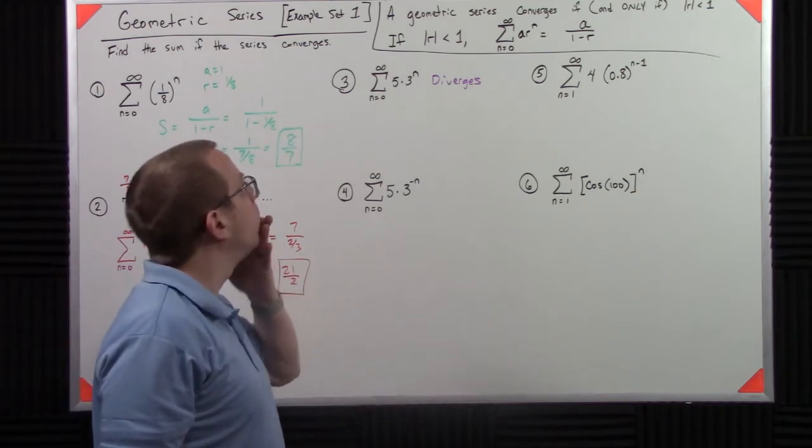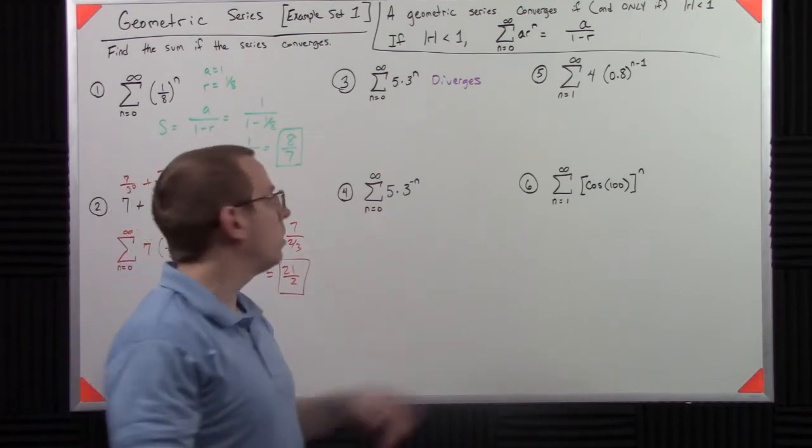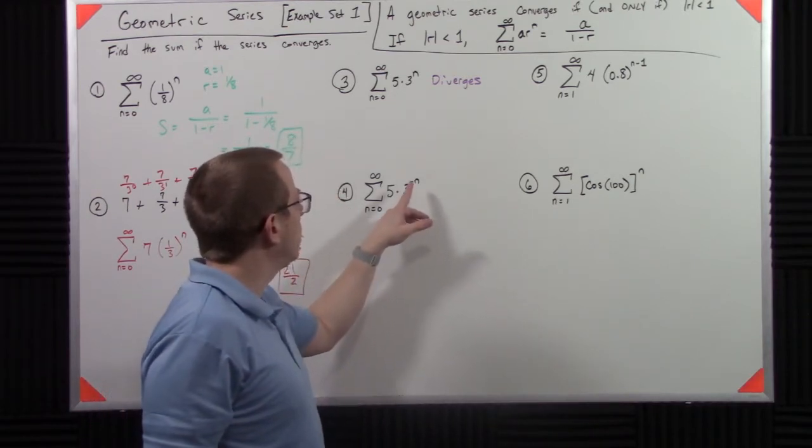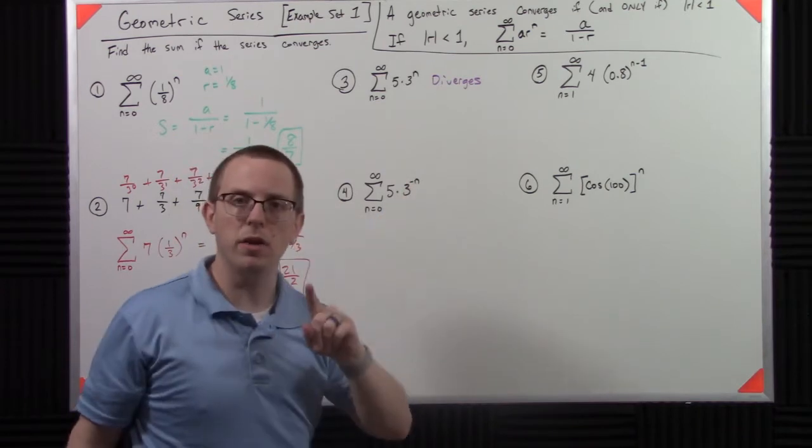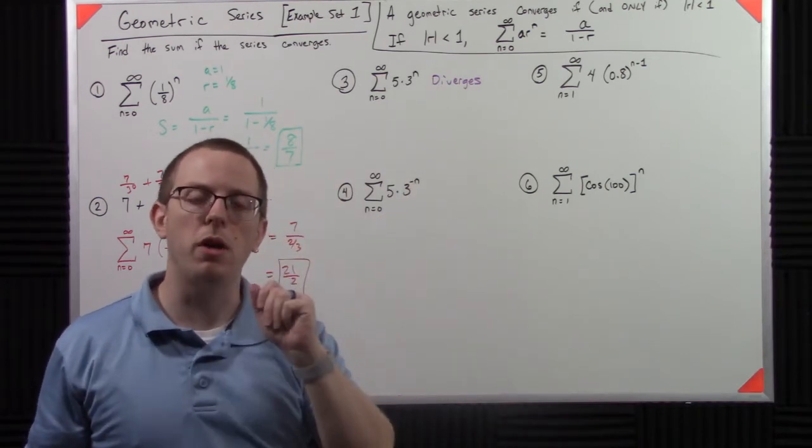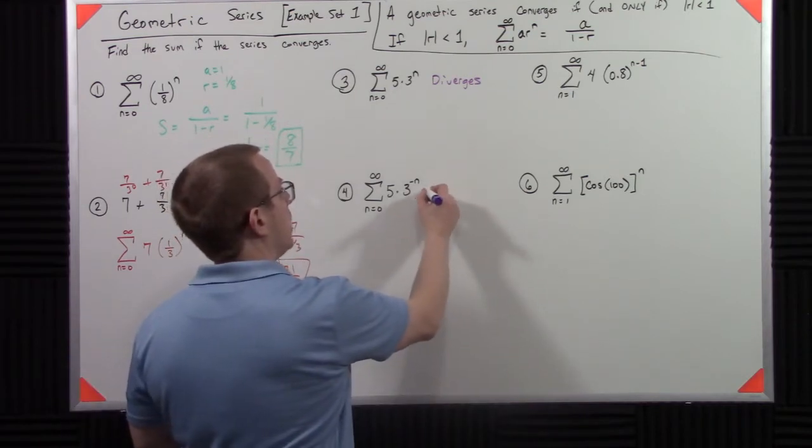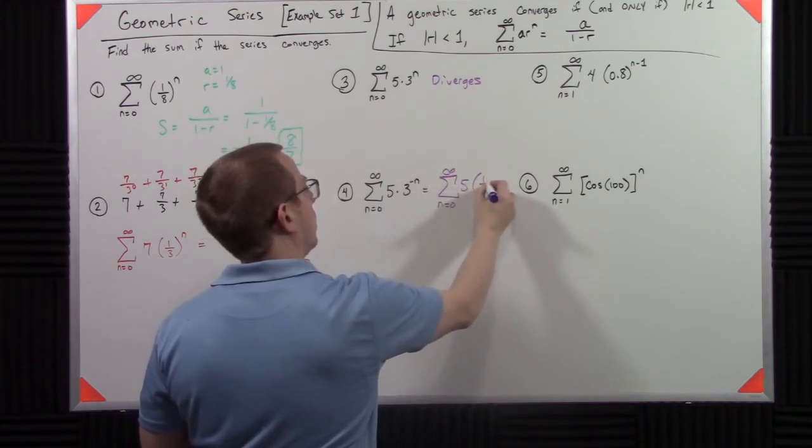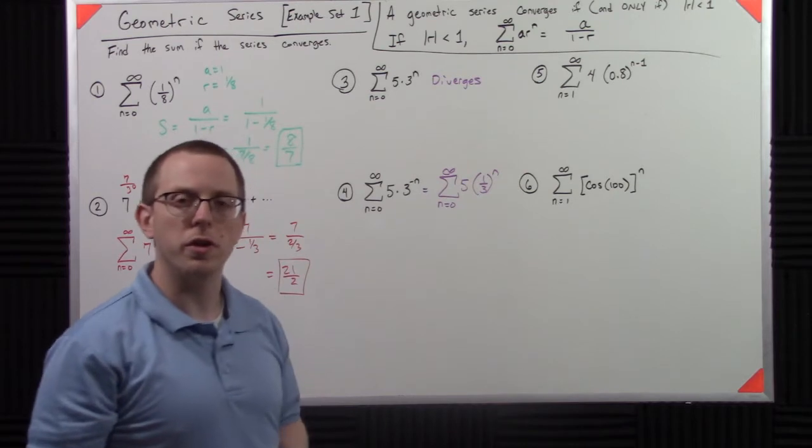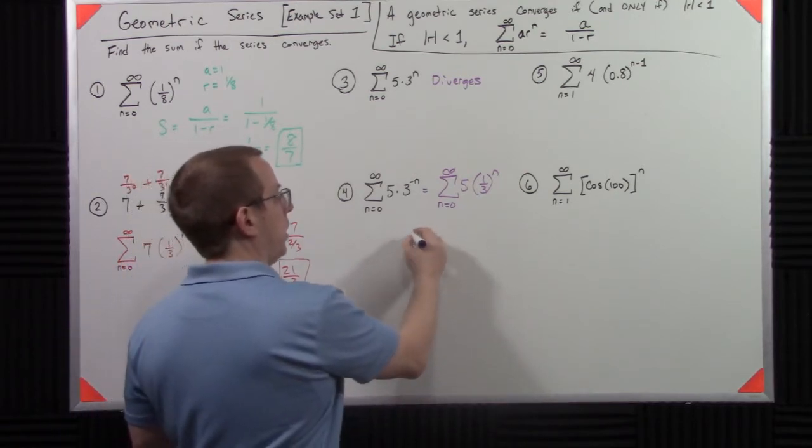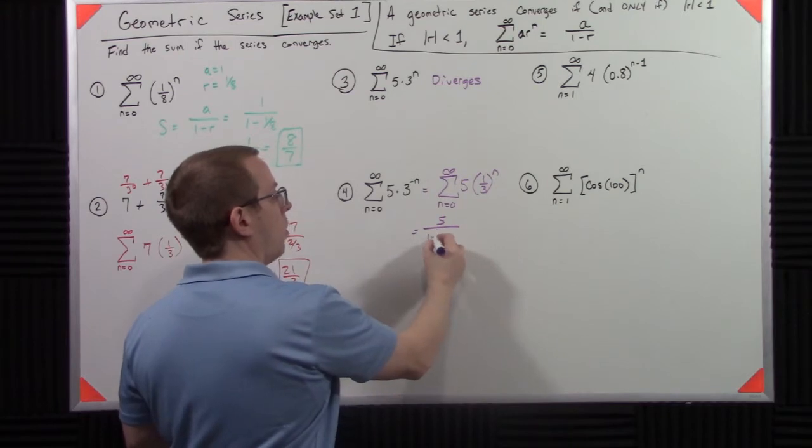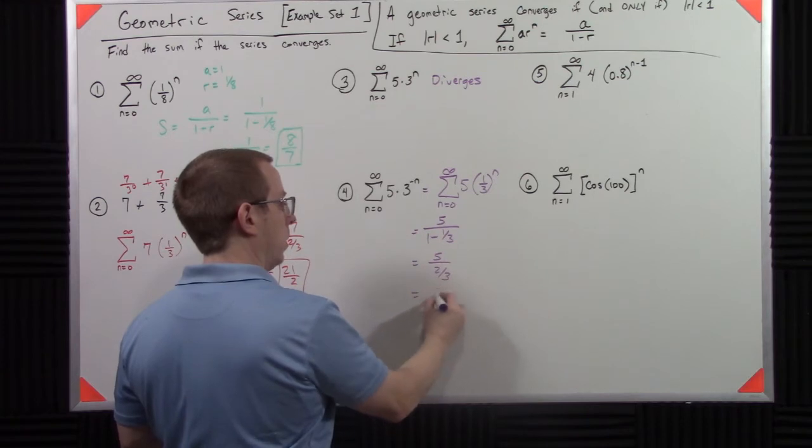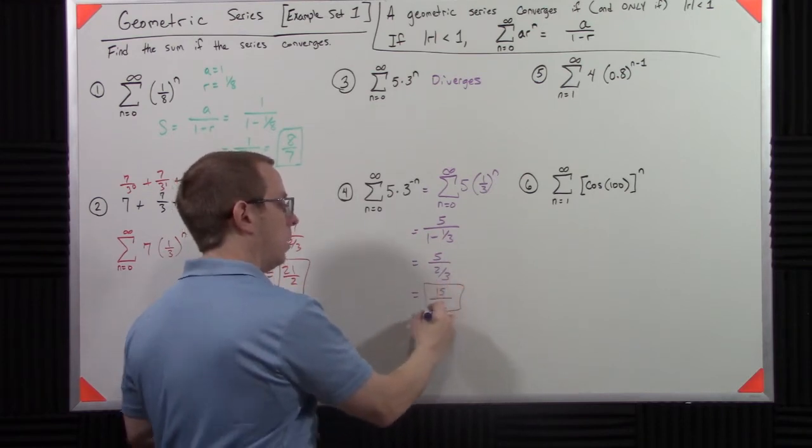Now what about this one? I mean, if I look, it looks like r is also greater than 1. But it's not. The reason it's not is because that's 3 to the negative n. So what I have to do is watch out for that. So I need to rewrite this as 5 times 1/3 to the n. So then, a is 5, r is 1/3, giving me 15/2.